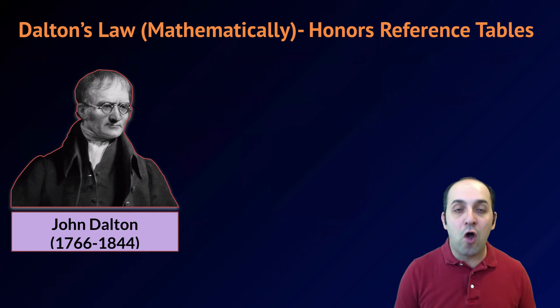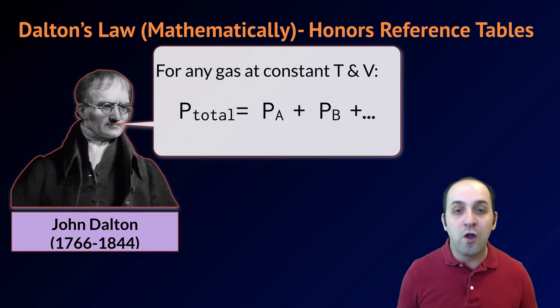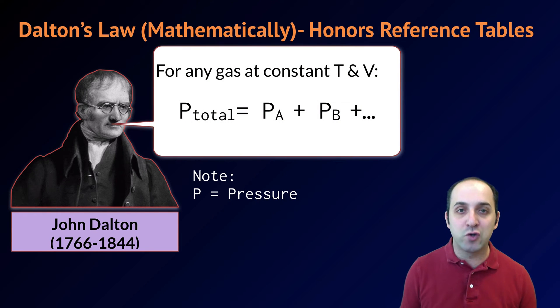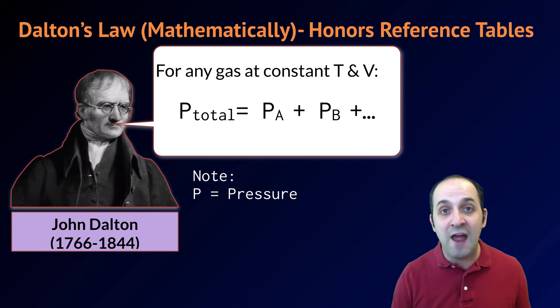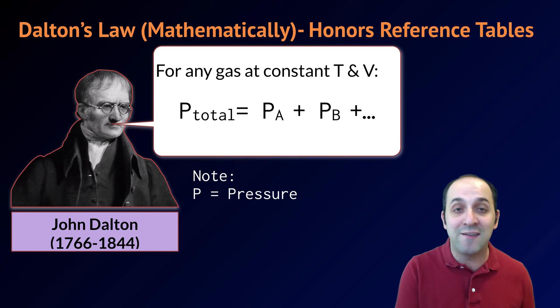Mathematically, we can express Dalton's law of partial pressures as follows. For any gas at constant temperature and volume, the total pressure is going to be equal to the pressure of the first gas plus the pressure of the second gas plus the pressure of every other gas in the mixture. This formula is given to you on your honors reference tables, and you should be able to use it to solve problems.